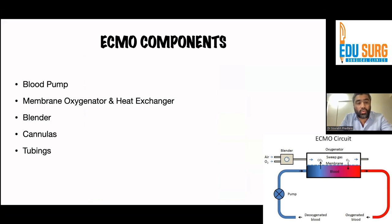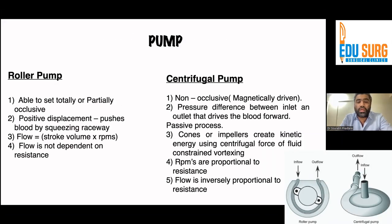Now coming to the components of ECMO. The components are: the blood pump, the membrane oxygenator, the heat exchanger, the blender, cannulas, and tubings. Talking about roller pumps — roller pumps are basically positive displacement pumps which use rollers along flexible tubing to provide the pumping stroke and give direction to blood flow. They can provide pulsatile as well as non-pulsatile flow. The tubings are basically latex, polyvinyl chloride, and silicon rubber. Hemolysis is maximum in latex rubber, followed by PVC, and least in silicon rubber.